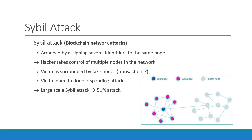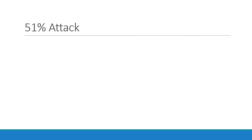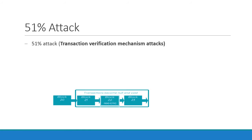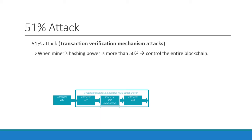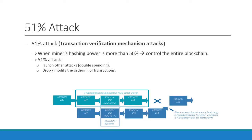In large-scale cyber attacks, where the attackers become able to manage the majority of the network computing power or hashing rate, they can create the 51% attack. The 51% attack is the most common one in blockchain and falls in the transaction verification mechanism attacks category. It occurs when the miner's hashing power exceeds 50% of the total hashing power of the blockchain. In such cases, the hackers may change the ordering of transactions, reverse transactions, or even impede transactions from being confirmed by hindering normal mining operations — simply, they can control the blockchain and launch double spending attacks.